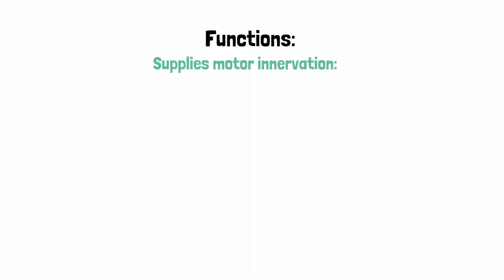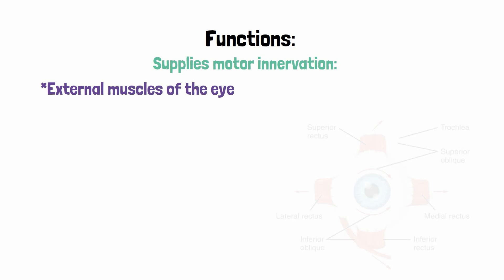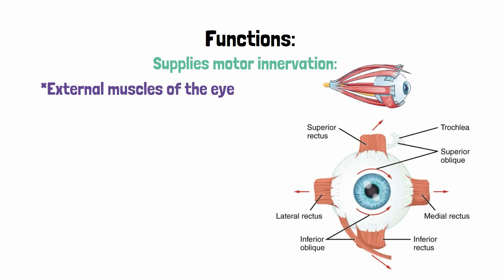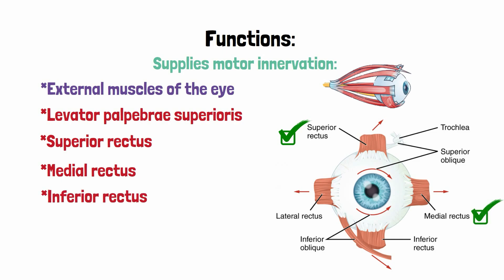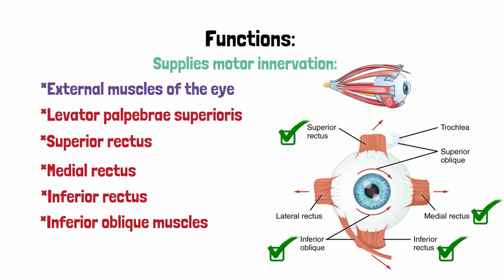The oculomotor nerve supplies motor innervation to all external muscles of the eye including the levator palpebrae superioris, superior rectus, medial rectus, inferior rectus, and inferior oblique muscles. However, it must be remembered that it does not provide innervation to two external muscles, that is the superior oblique and lateral rectus muscles.